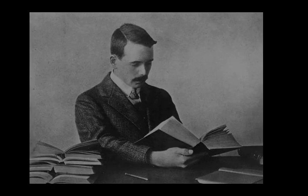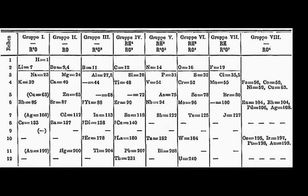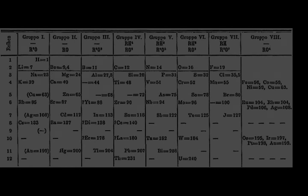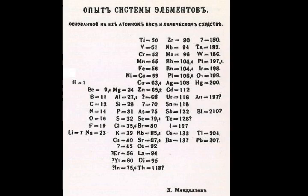The periodic table and law are now a central and indispensable part of modern chemistry. The periodic table continues to evolve with the progress of science. In nature, only elements up to atomic number 94 exist; to go further, it was necessary to synthesize new elements in the laboratory.